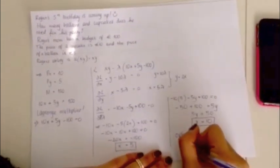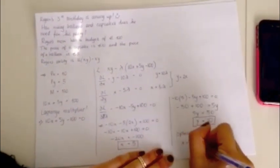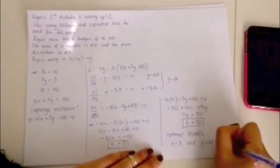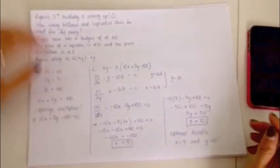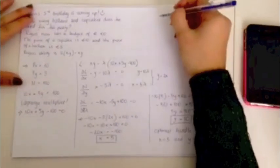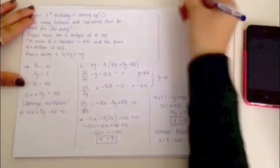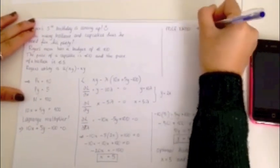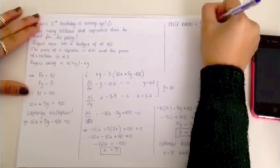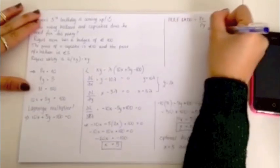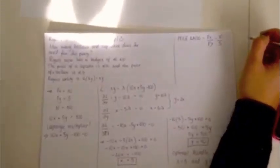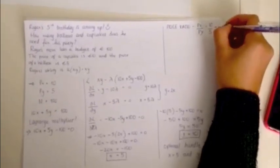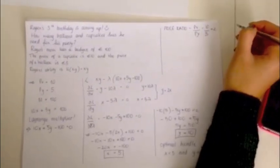We could check this using the price ratio, as mentioned before, that the ratio has to be equal to the price ratio. So if we take the price, so our price ratio, remember, was PX over PY, which equals 10 over 5. At this point, the MRS is equal to the price ratio, which is PX over PY.